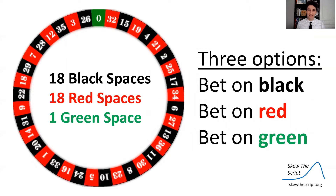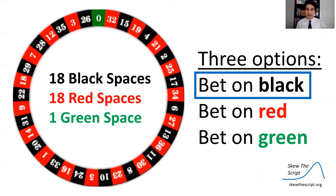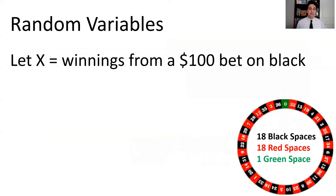Let's talk about roulette. Roulette is a game where they have a spinning wheel with different spaces with numbers and colors. There are specifically 18 black spaces, 18 red spaces, and one green space on the European roulette tables. If you bet on a certain color and the ball lands on that color, you win your bet. Let's pretend that we bet on black, and make a random variable X equal to the winnings from a $100 bet on black.